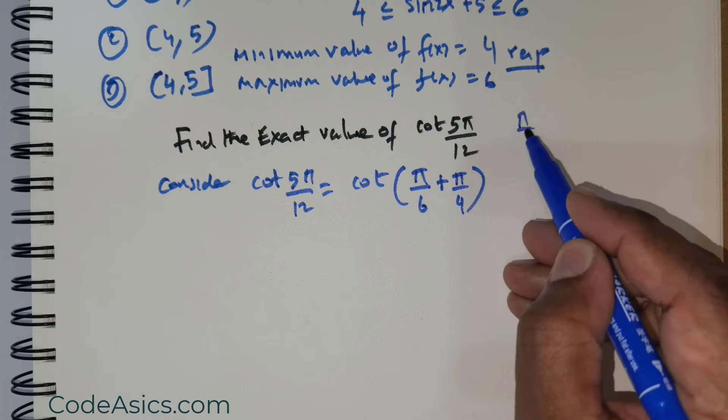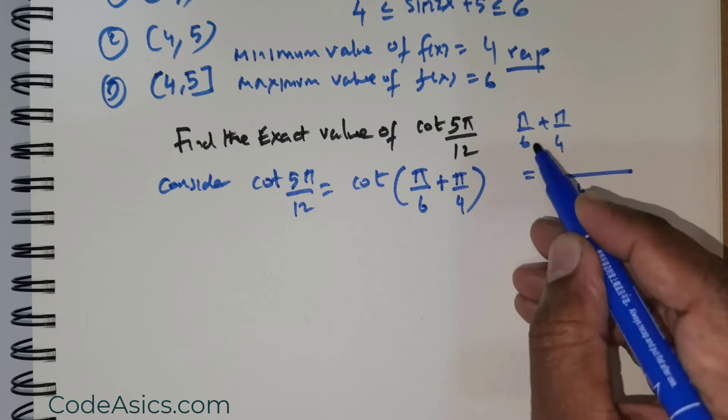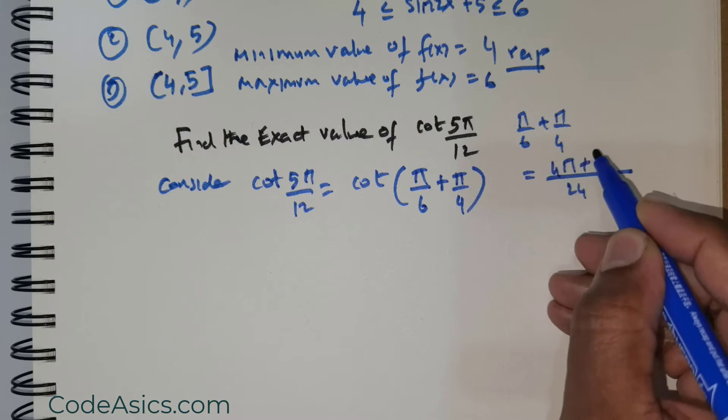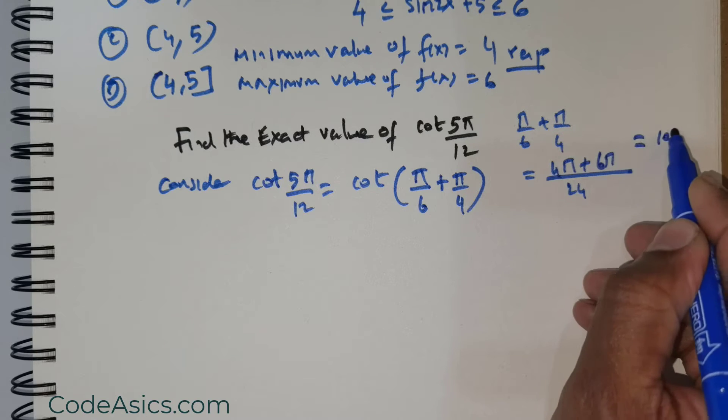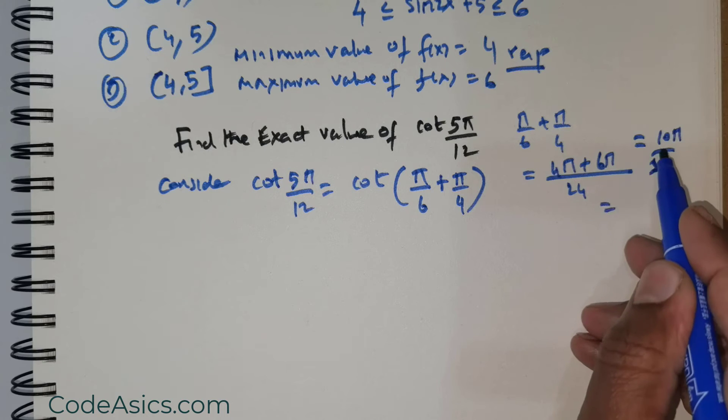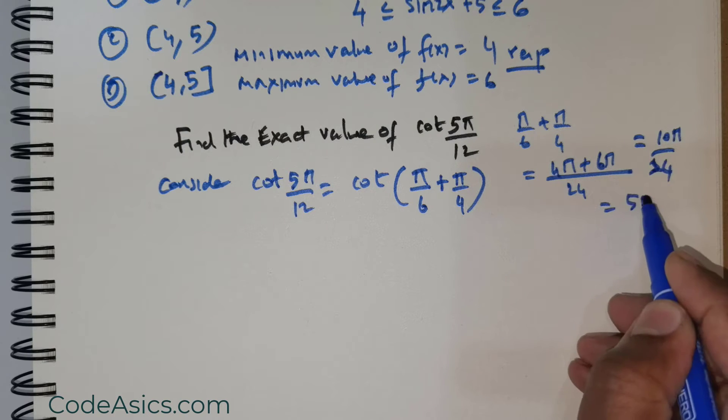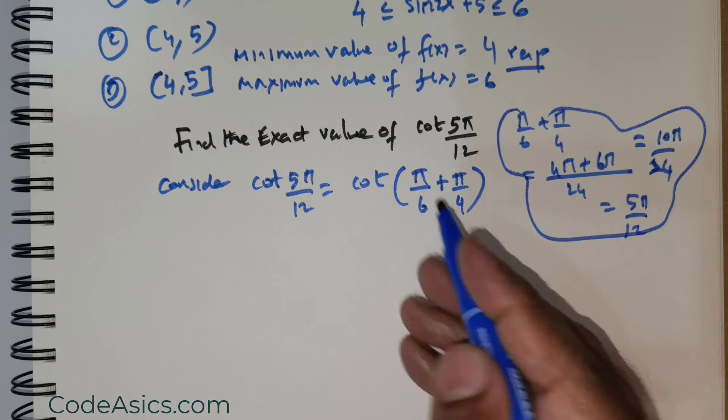If I were to take the LCM as 24, this is going to be 4π, this is going to be 6π, and I would get 10π/24. I can clearly reduce it by 2, so that would give me 5π/12, right? So this is what we've got.